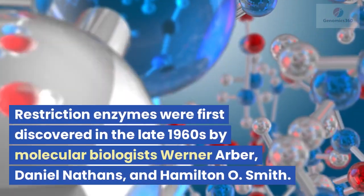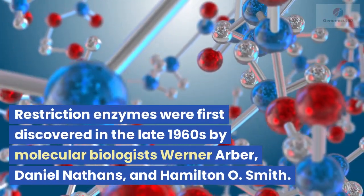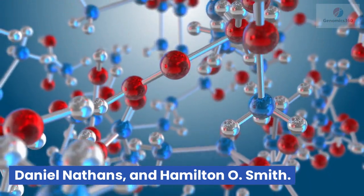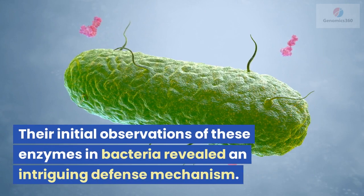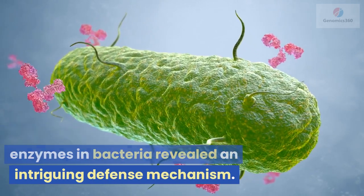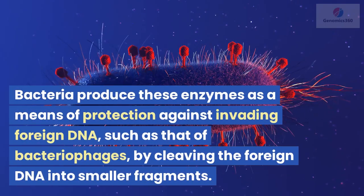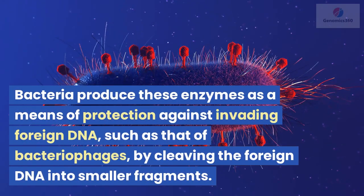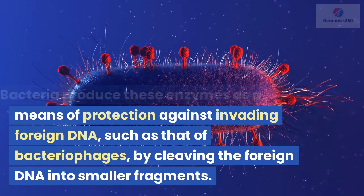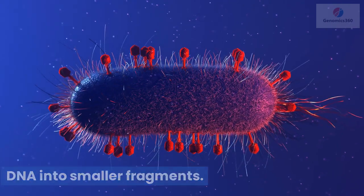Restriction enzymes were first discovered in the late 1960s by molecular biologists Werner Arber, Daniel Nathans, and Hamilton O. Smith. Their initial observations of these enzymes in bacteria revealed an intriguing defense mechanism. Bacteria produce these enzymes as a means of protection against invading foreign DNA, such as that of bacteriophages, by cleaving the foreign DNA into smaller fragments.